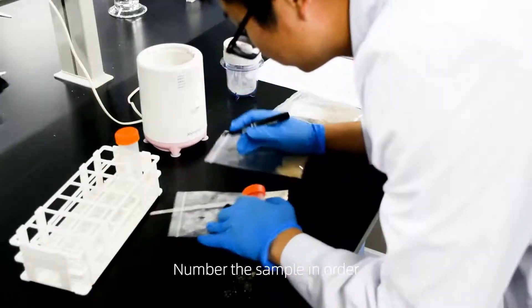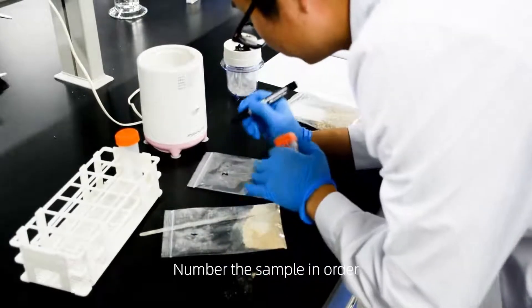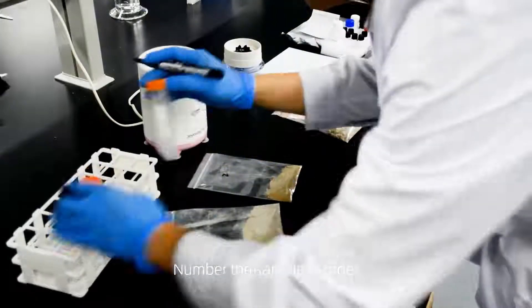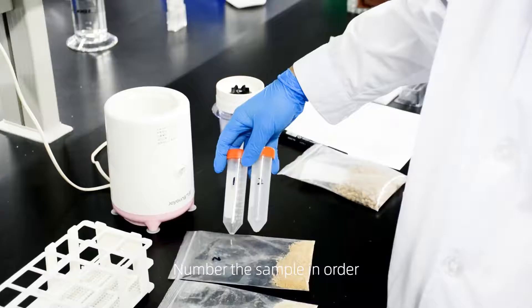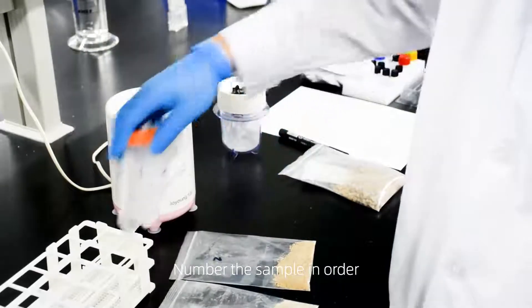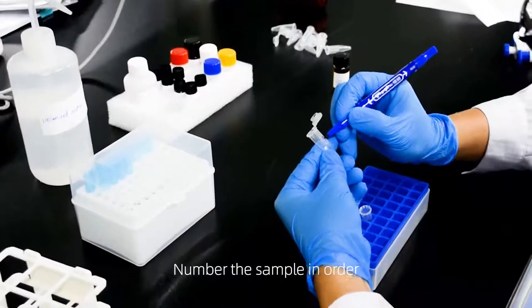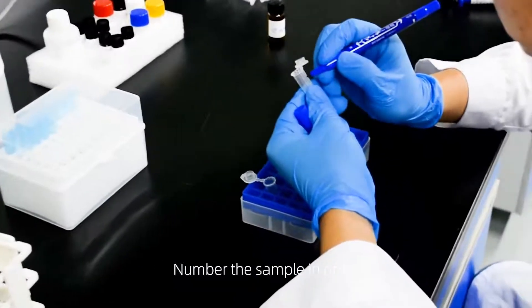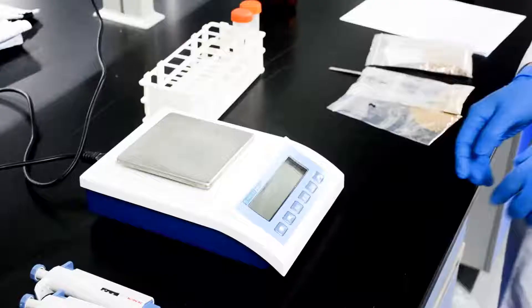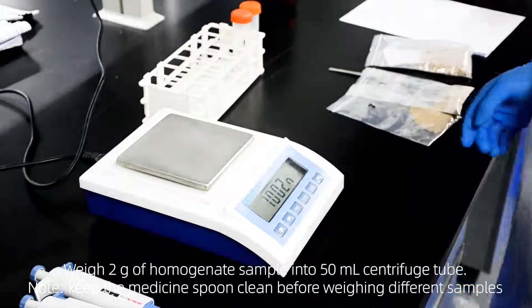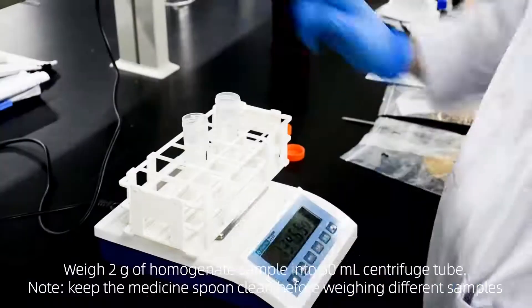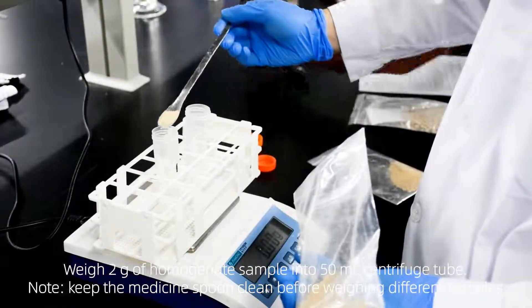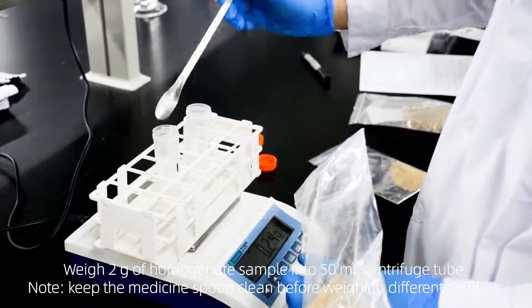Number the sampling order. Weigh 2 grams of homogenized sample into a 50 milliliter centrifuge tube. Keep the medicine spoon clean before weighing different samples.